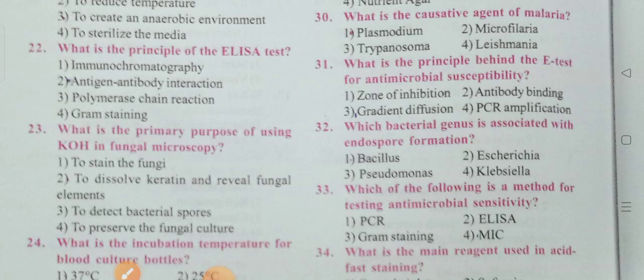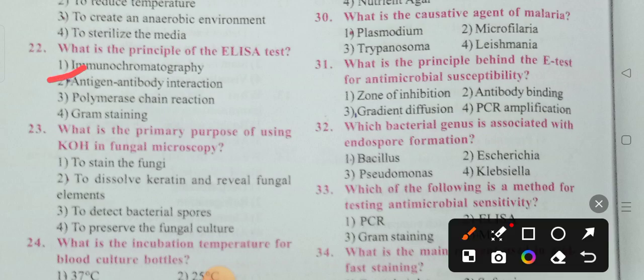Next question: What is the principle of the ELISA test? ELISA stands for Enzyme-Linked Immunosorbent Assay. The options are: immunochromatography, antigen-antibody interaction, polymerase chain reaction, and gram staining. Option 2, antigen-antibody interaction, is the correct answer — this is the main principle of the ELISA test.